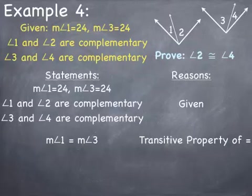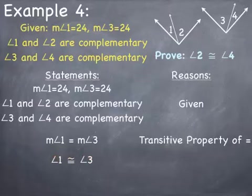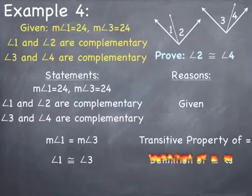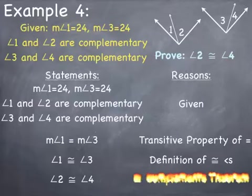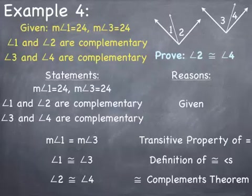Angles 1 and 3 are complementary to angles 2 and 4 respectively. Before applying the congruent complements theorem, I have to say that angles 1 and 3 are congruent to each other — going from equals to congruent by the definition of congruent angles. Now I can say that angle 2 is congruent to angle 4 using the congruent complements theorem, because angles 2 and 4 are complementary to two congruent angles.